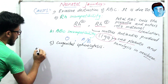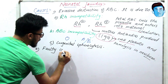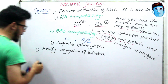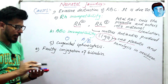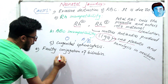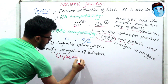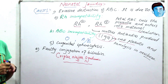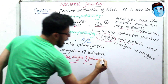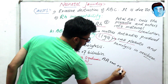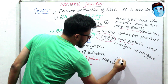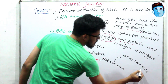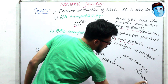Another cause of pathological jaundice is faulty conjugation of bilirubin. For example, there is a condition called Crigler-Najjar syndrome. It is an autoimmune disease where there is antigen-antibody reaction. Those antigen-antibody reactions act on the hepatocytes and cause their destruction.